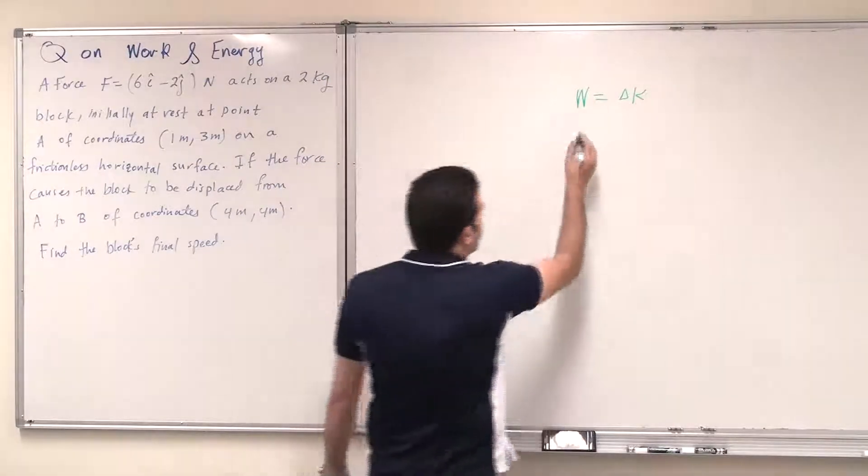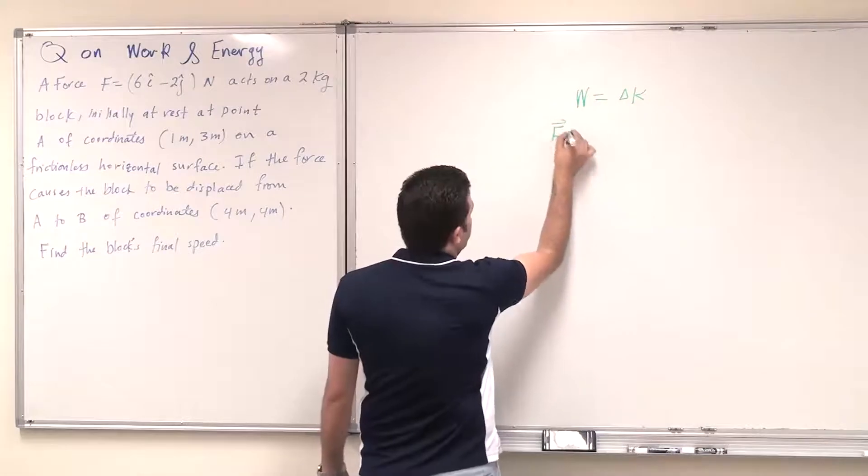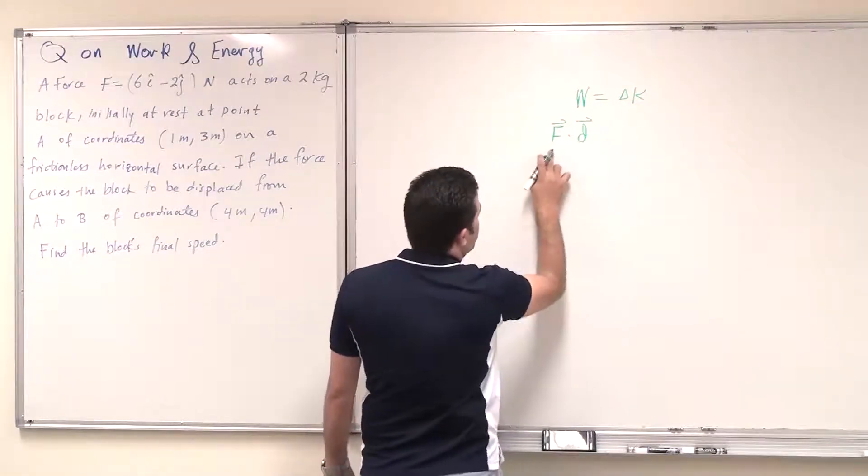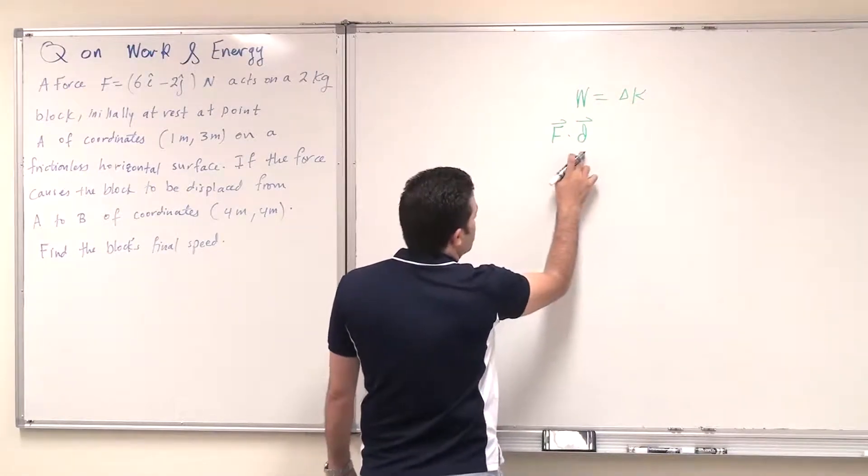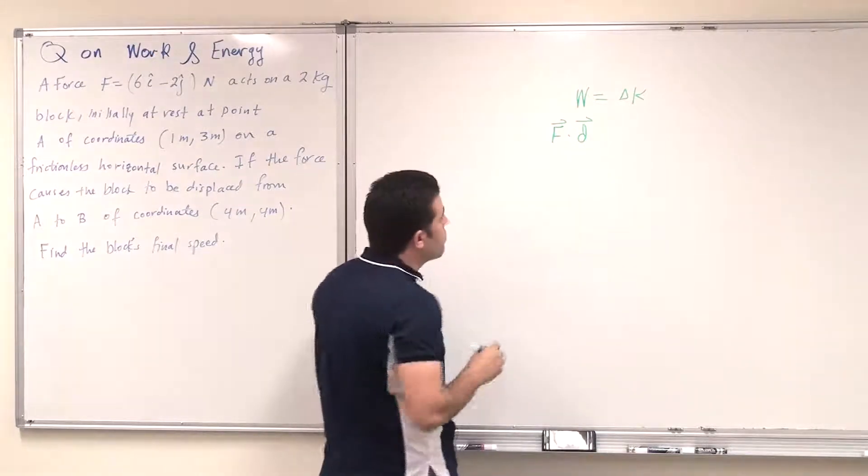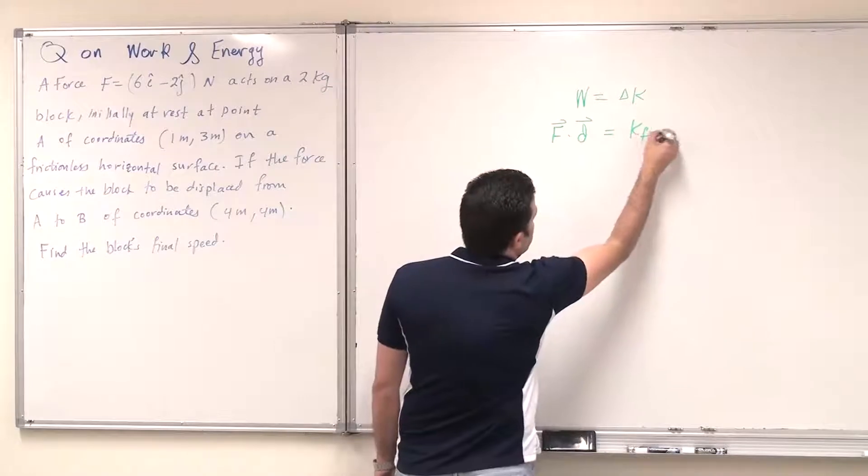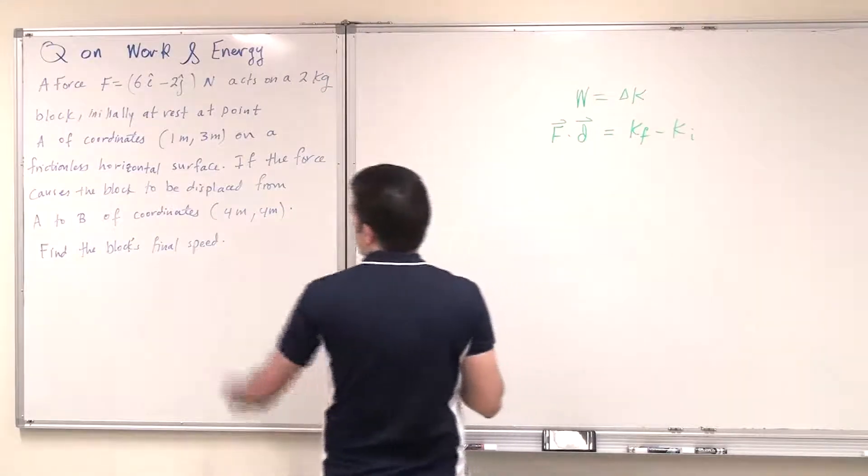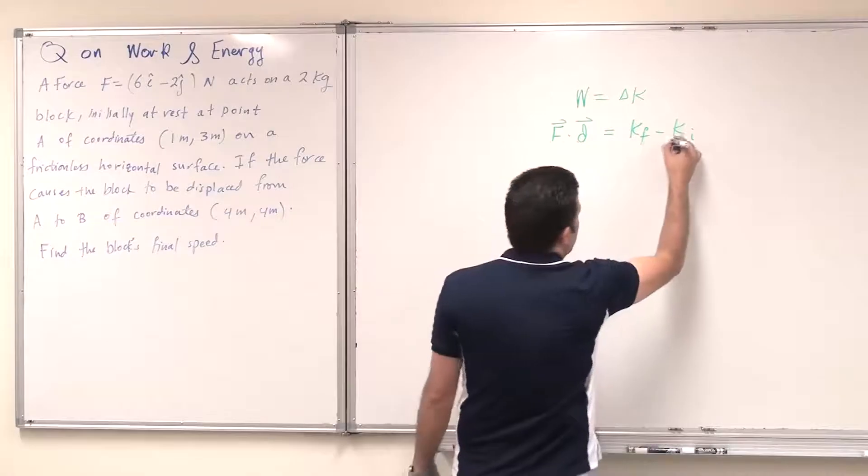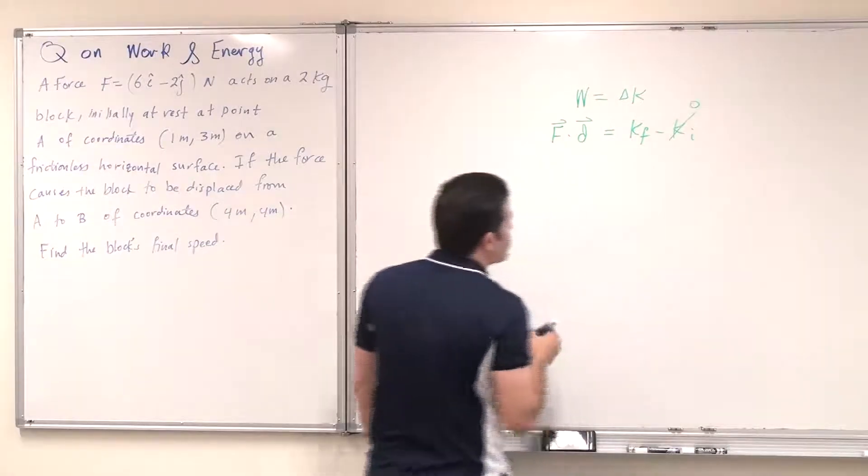So the work here is F dot D, which is the force applied dot product with the displacement, should equal K final minus K initial. Now it said that this block is initially at rest, so I can cancel this term.